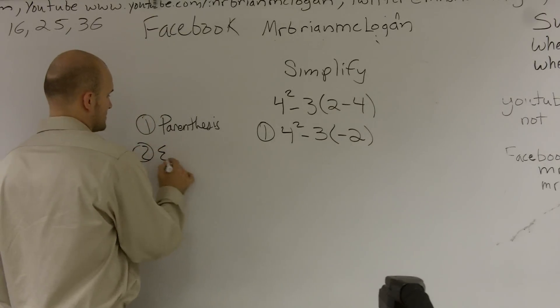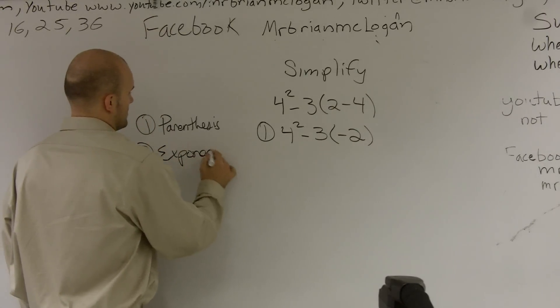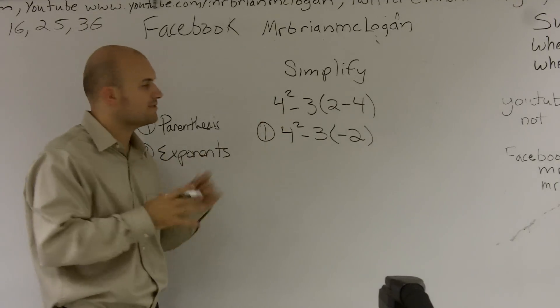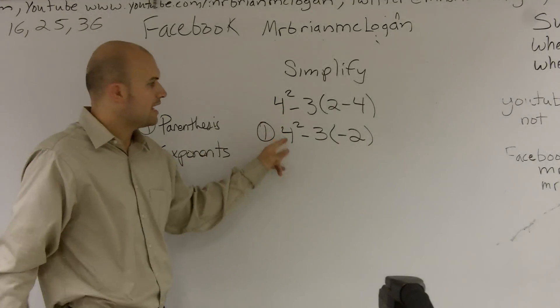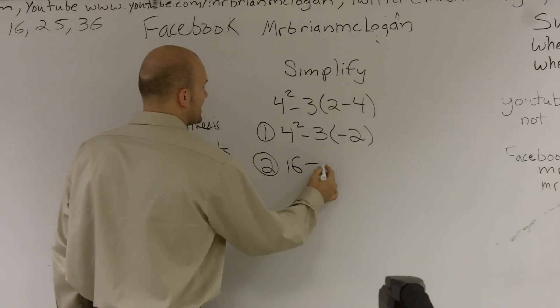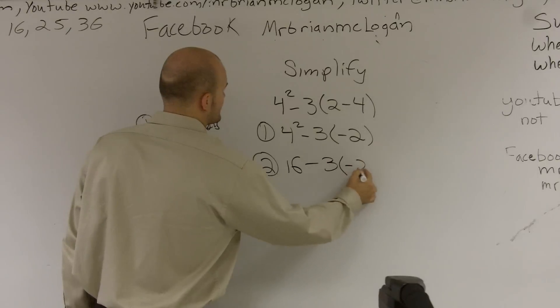Second step, exponents. Are there any exponents? You can say, yes, 4 squared. So before I do any other operations, I want to make sure I square my fourth. So 4 squared is going to give me 16 minus 3 times a negative 2.